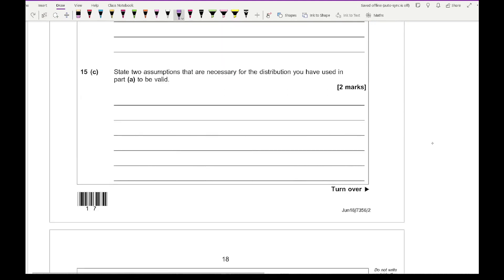For 15c, state two assumptions necessary for the distribution in part A to be valid. There's a couple of things we can write. It needs to be independent. In other words, one throw cannot be affected by the result of another throw. You'd think that if Nicola threw a dart and she was way off, judging by how far away she was, she would then get close in her second dart. It needs to be consistent and not be the case.